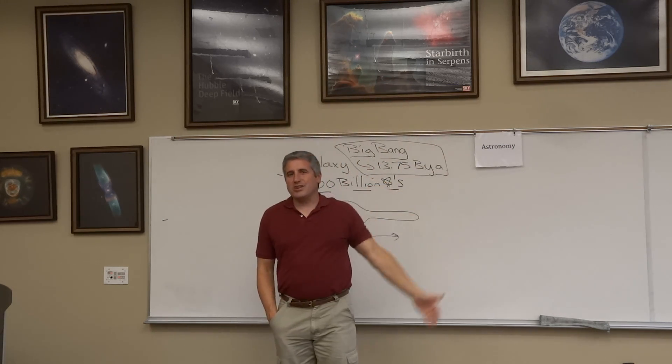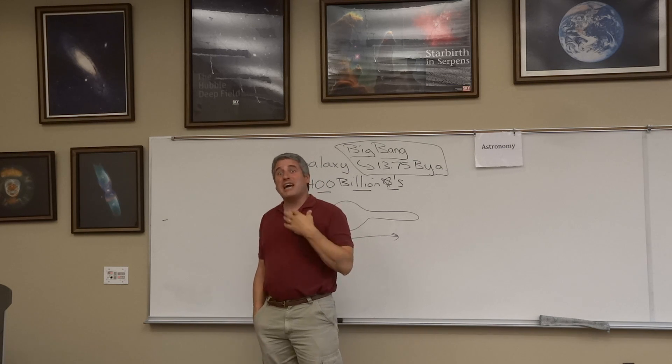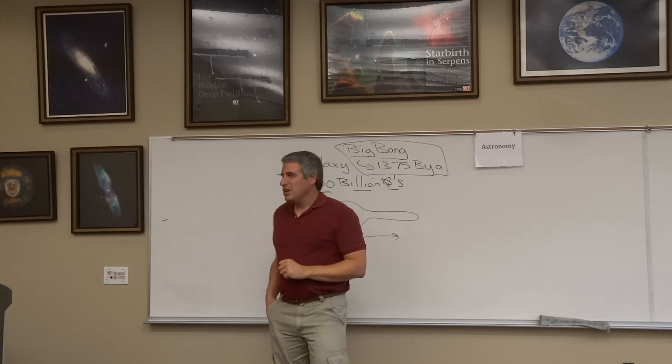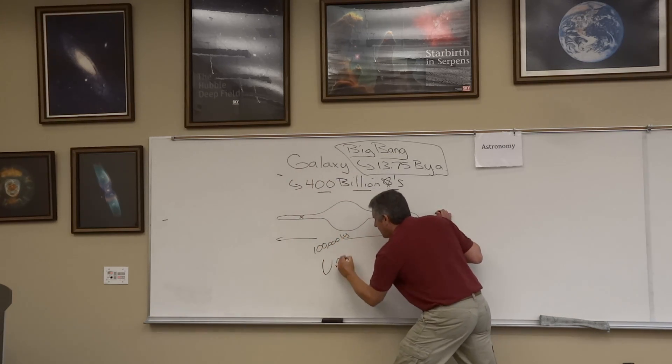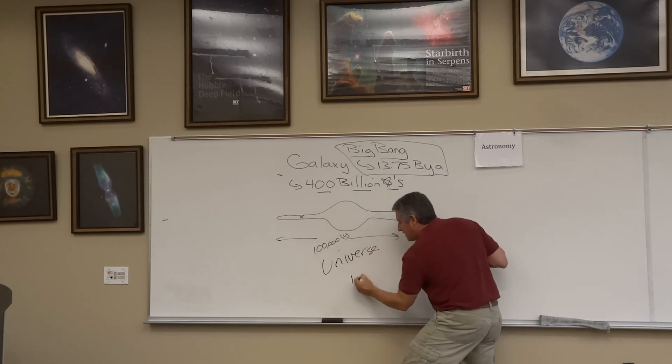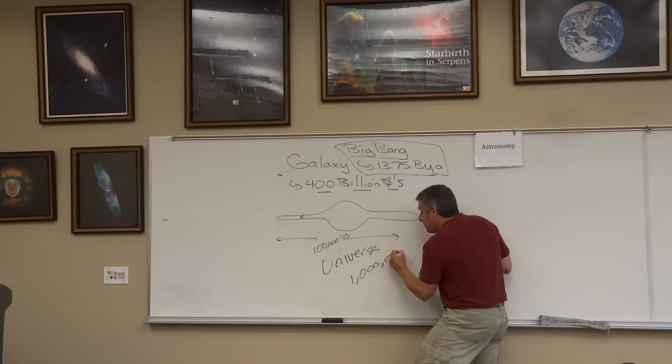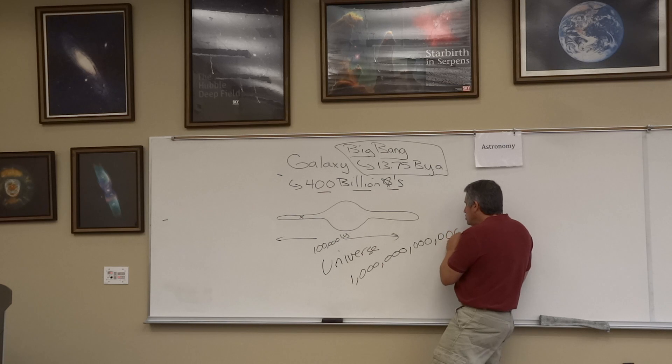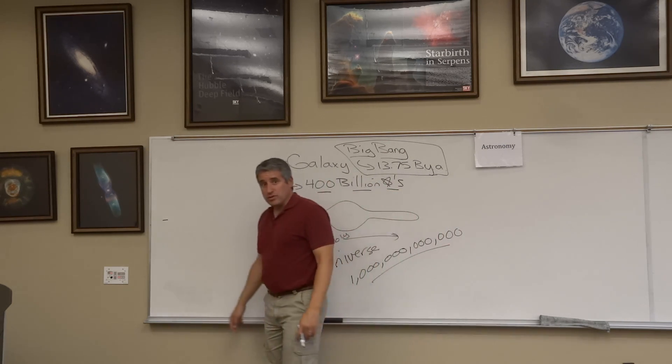Based on how many grains of sand there are in the sky, we can estimate how many galaxies there might be in the universe. That's why you've got to be sitting down. We estimate that the universe might have as many as not a thousand, not a million, not a billion, but as many as one trillion galaxies in the universe.